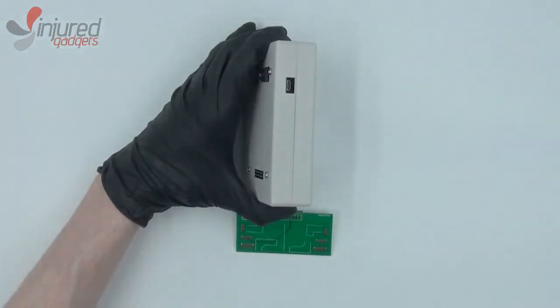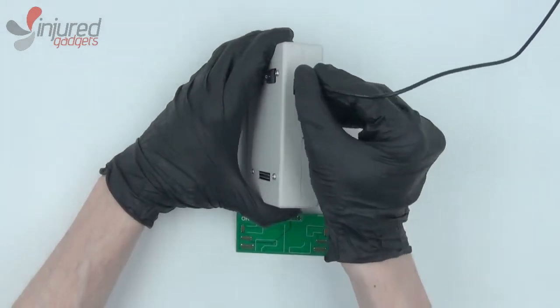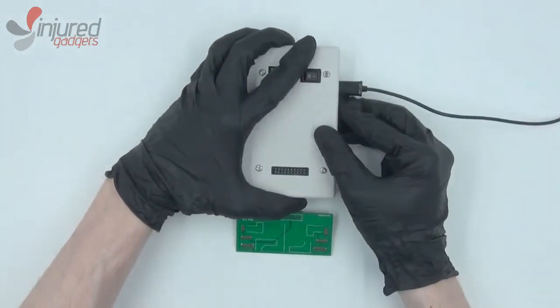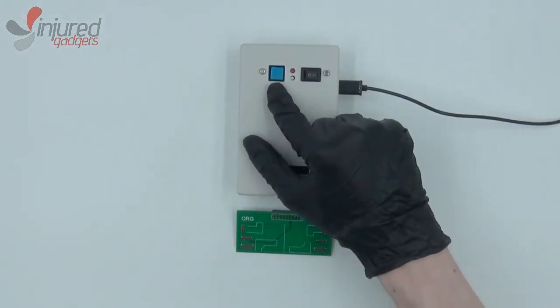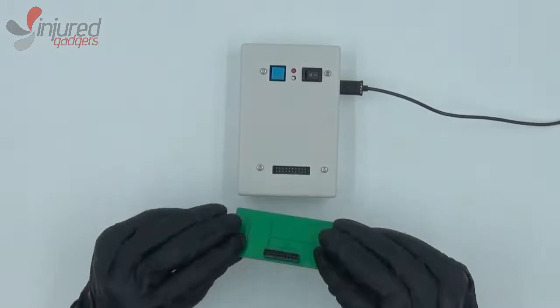Now first we'll need to power our box by micro USB, so you can plug into this port here. We have a power button, indicator lights, read write button, and a port for our board.